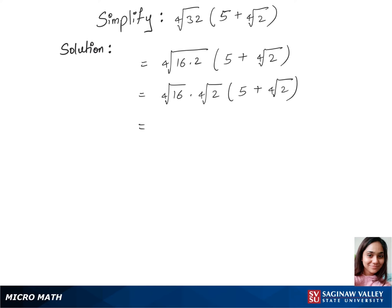We can write the 4th root of 16 as 2, because 16 is 2 to the power of 4. So we now have 2 times 4th root of 2, times the bracket which remains the same: 5 plus 4th root of 2.